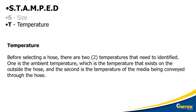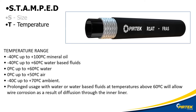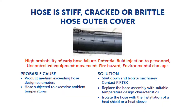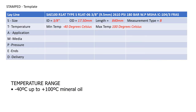The two critical temperatures will be the ambient temperature and the temperature of the media that we're conveying through the hose. According to the data sheet, my hose can go down to minus 40 degrees Celsius and up to 100 degrees Celsius for mineral oil. A common cause of hoses cracking and being brittle, especially in the outer cover, is using a hose with the incorrect temperature rating. Let's add that information to my template.